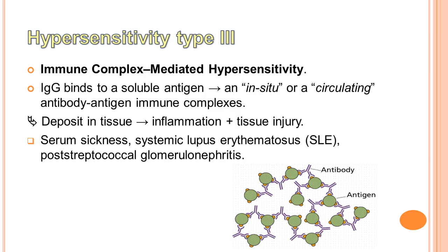The third one is hypersensitivity type 3, or immune complex-mediated hypersensitivity. The antibody IgG binds to a soluble antigen forming in-situ or circulating antibody-antigen immune complexes, which deposit in tissue resulting in inflammation and tissue injury. For instance, serum sickness, systemic lupus erythematosus (SLE), or post-streptococcal glomerulonephritis. Phản ứng quá mẫn loại 3 với phức hợp miễn dịch trung gian. Kháng thể IgG liên kết kháng nguyên hòa tan tạo phức hợp miễn dịch lắng đọng vào mô gây viêm và tổn thương mô.